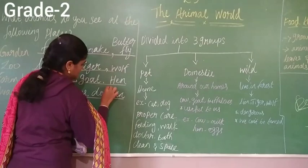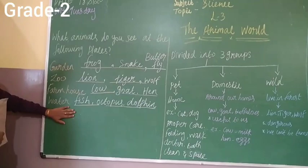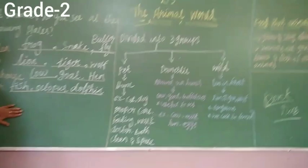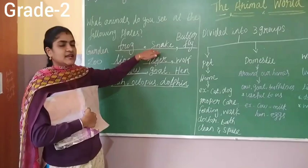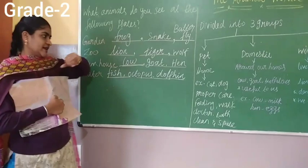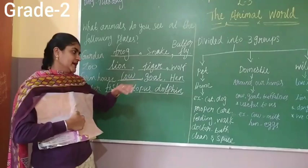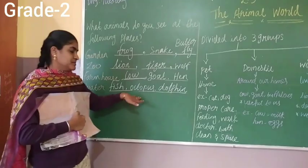In water you can find many types of animals — for example, fish, octopus, and dolphin. To recap: in the garden we can see frog, snake, and butterfly; in the zoo, lion, tiger, wolf, etc.; in the farmhouse, cow, goat, and deer; and in water, fish, octopus, and dolphin.